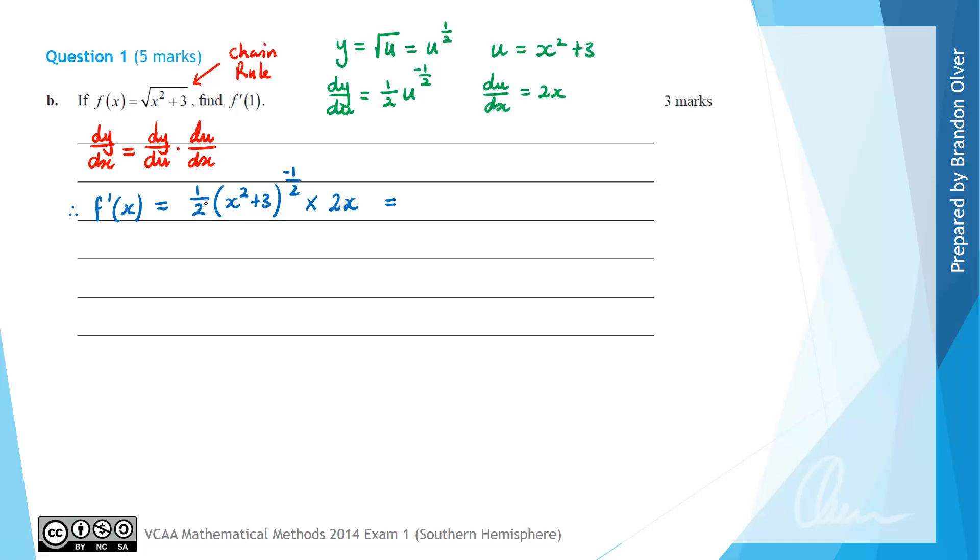Just to rewrite this slightly, we can cancel the divide by 2 and the multiply by 2 here. And we can also work with this exponent. So on the top line we're just going to have x divided by,